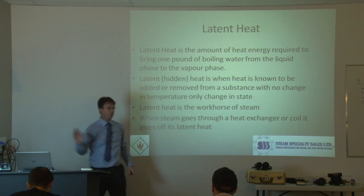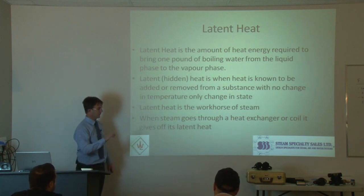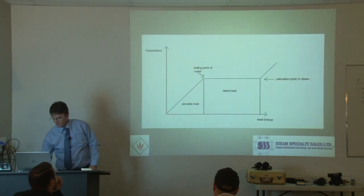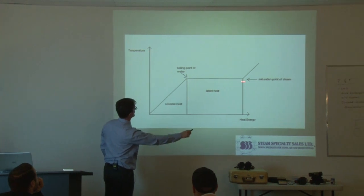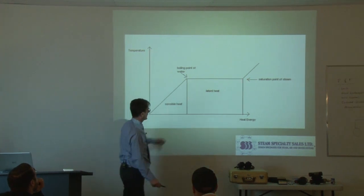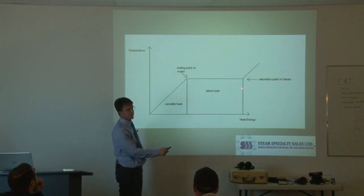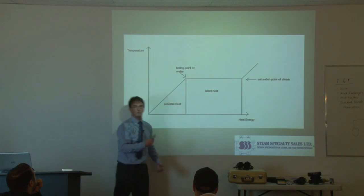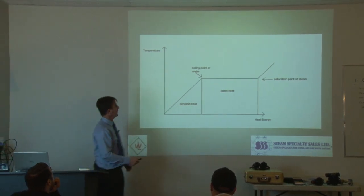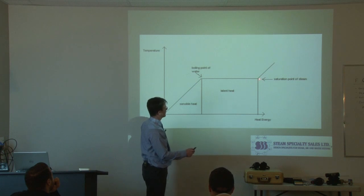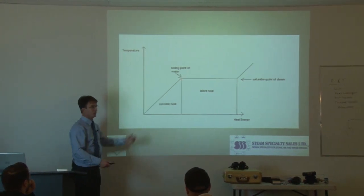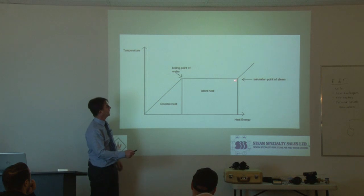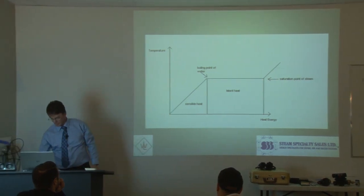Latent heat is the workhorse of steam. So when you're taking steam and you pass it through a heat exchanger or through a coil or through a jacketed vessel, we're giving latent heat from the steam to the process. So your latent heat is this point here — notice the temperature doesn't go up, we're just changing phase. In theory, we're 100% saturated, and this is what a boiler tries to do. Unfortunately, no boiler is 100% efficient. And then when we bring this steam into our process, we give up this heat and turn it back into liquid, which is what we call condensate. So steam condenses and turns back into a hot liquid that we call condensate.